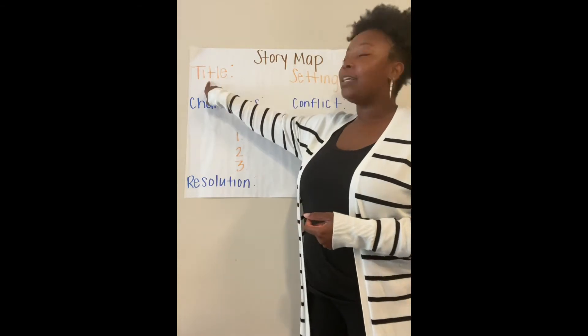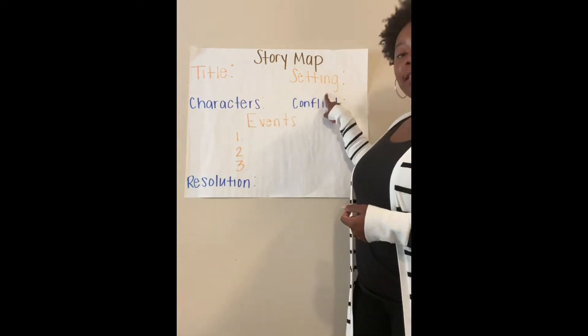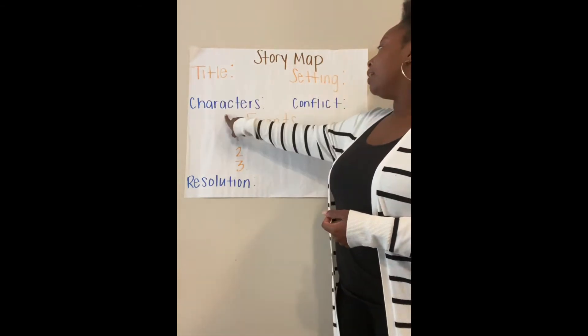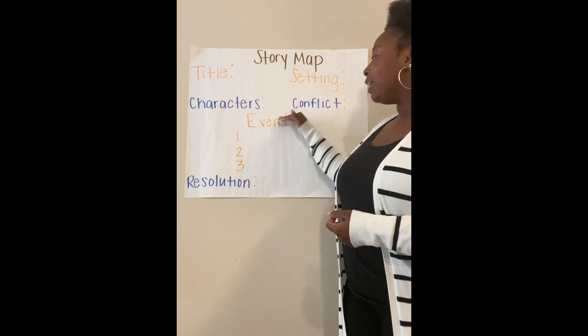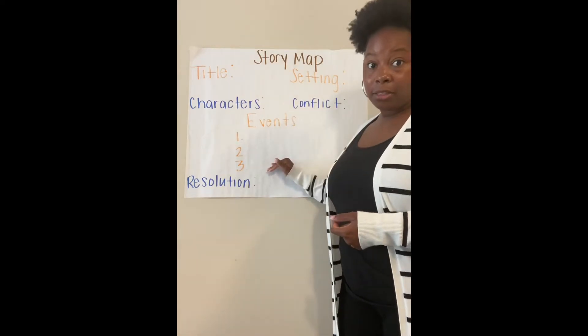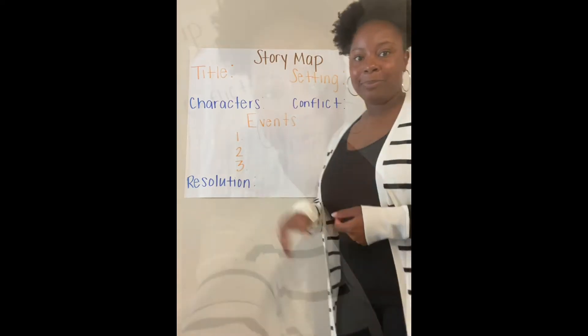On your story map, you have a title. You get a chance to write the setting, characters, conflict, at least three events, and then the resolution.